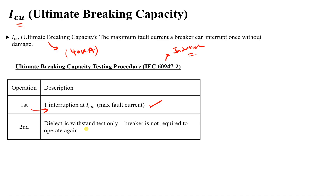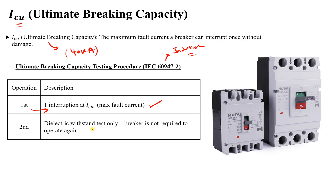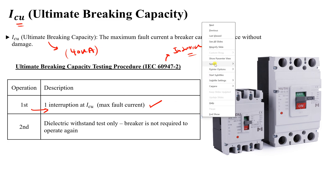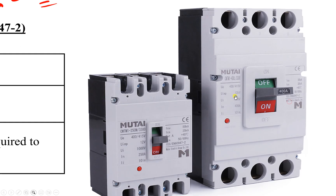The dielectric withstand test ensures that after this severe fault, our insulation level is still the same as before — the breaker's insulation did not degrade. Here is an example: if you look at this circuit breaker, you will see ICU and ICS values, which we will discuss in the next slides.